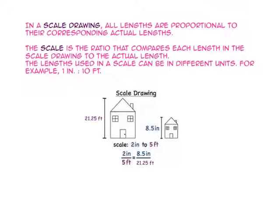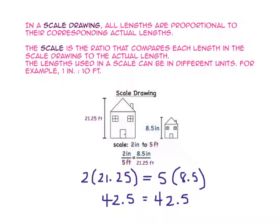We can check this by using cross products property. We will multiply 2 inches by 21.25 feet and 5 feet by 8.5 inches. Since each product is 42.5, we know the height of our drawing is proportional to the height of the actual house.